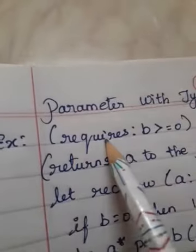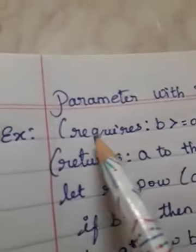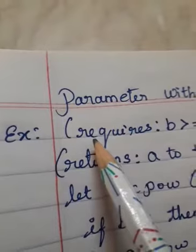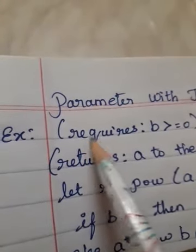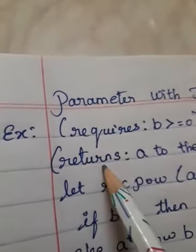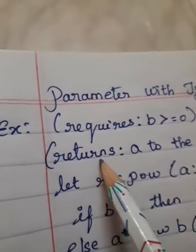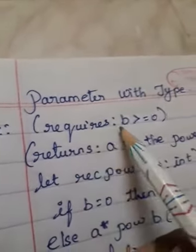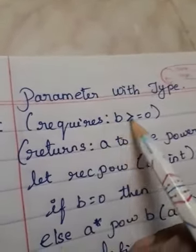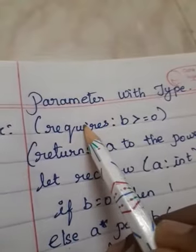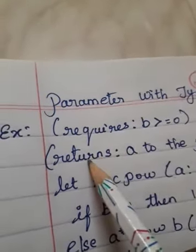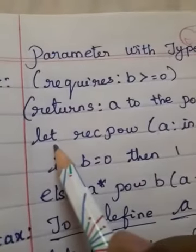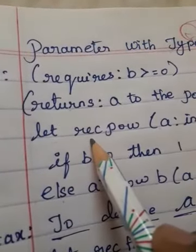In the first line we have 'requires'. As I already explained in the concept of parameter without type, 'requires' is a precondition and 'returns' is a postcondition. The condition given before is the precondition, and the condition given after is the postcondition.